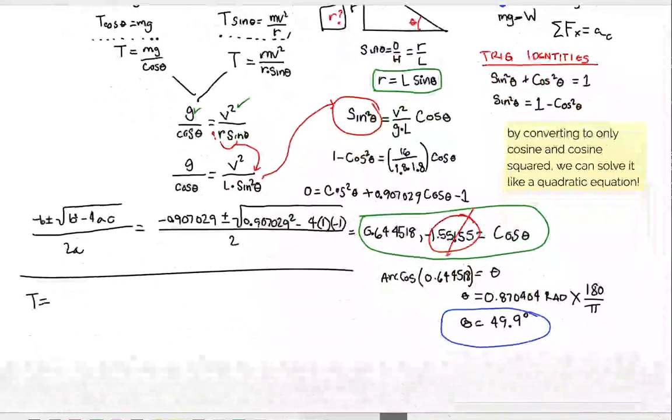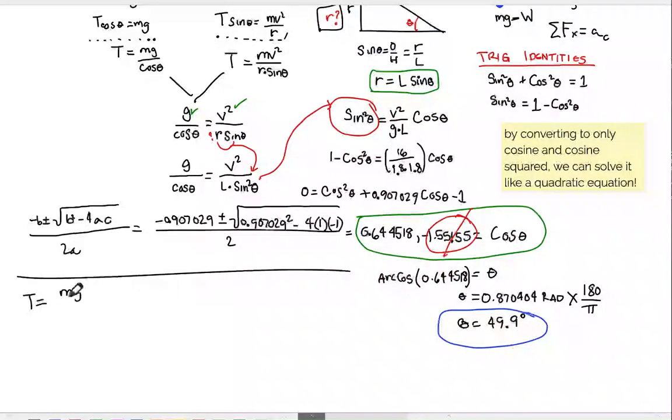Now the second part, that's going to be super easy. To solve for tension, we could have used either of the two equations. You notice we had mg over cos theta or mv squared over r sine theta. I'm just using the first one. 0.45 times 9.8 and the cosine of 49.9 is going to give us 6.85 newtons.